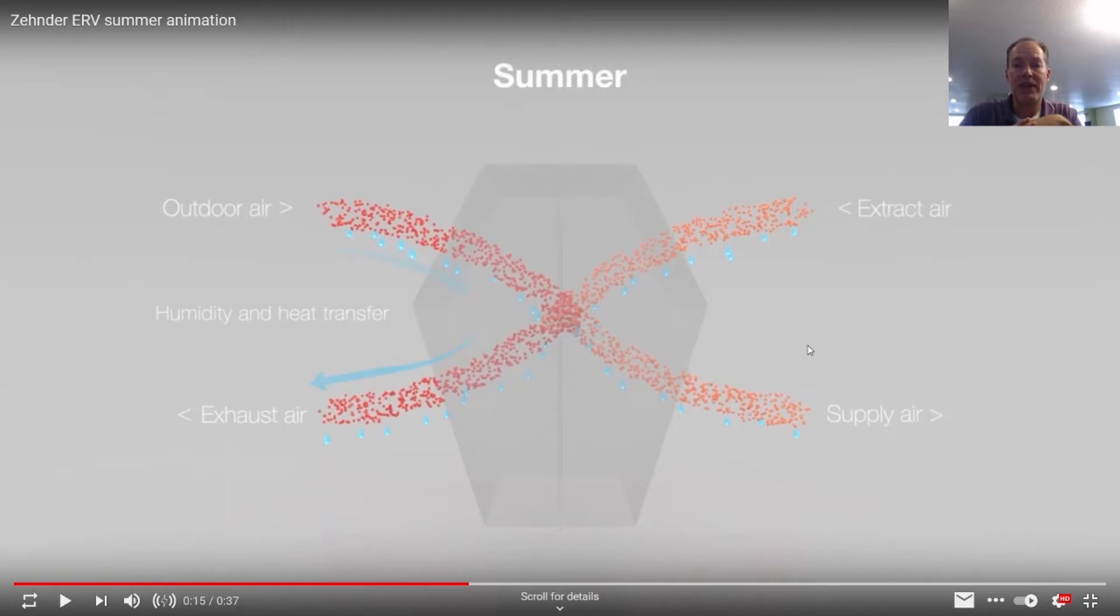So what you'll see is that the ERVs are more dominant all throughout the states. They're better in hot humid climates. They're better in cold dry climates.